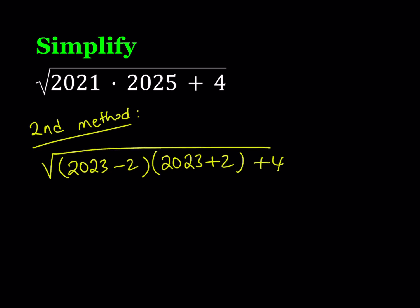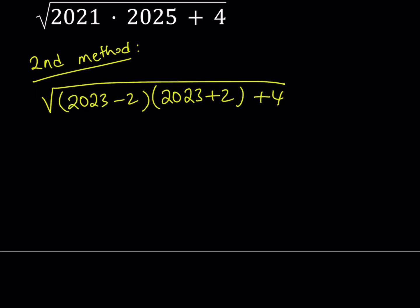Great. Now this allows me to use difference of two squares. You know a plus b multiplied by a minus b is equal to a squared minus b squared. So if you use that formula here you're going to get 2023 squared minus 4.